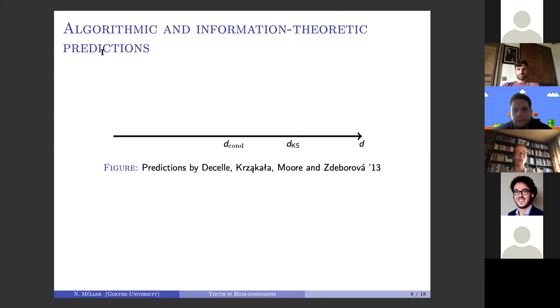They conjectured that there is this condensation threshold, above which it is information theoretically possible to discern the planted model from the null model. On the other side, there's this second threshold, which in our case is q minus one squared, above which it is efficiently possible to find an approximation of your planted coloring. In between, the problem is conjectured to be hard.